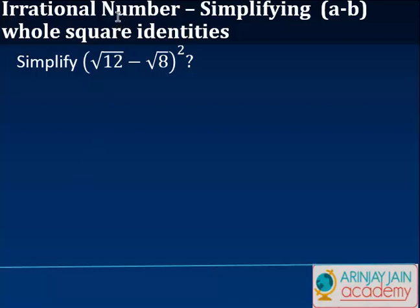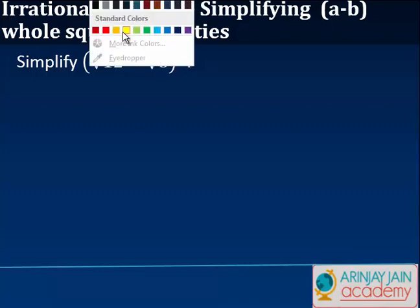Let's look at a case where we have to simplify irrational numbers of the form (a - b) whole square.